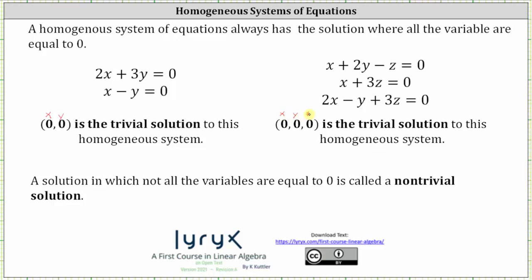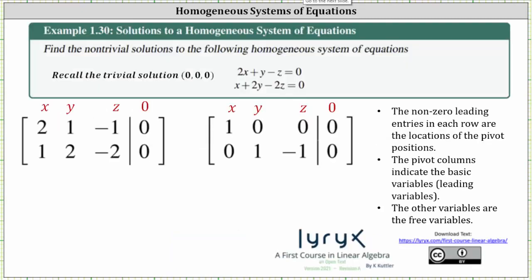A solution in which not all the variables are equal to zero is called a non-trivial solution. Let's look at an example of determining the non-trivial solutions to a homogeneous system. We have two equations with three unknowns, so the trivial solution is (0, 0, 0), but we're looking for the non-trivial solutions. To find the non-trivial solutions, if they exist, we set up an augmented matrix — in this case a two-by-four augmented matrix.